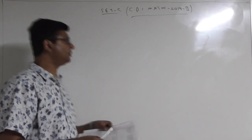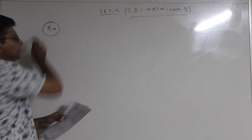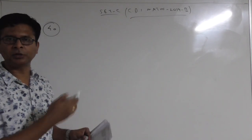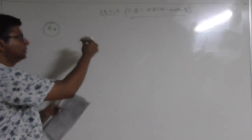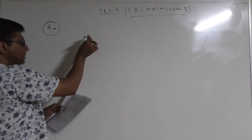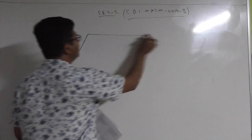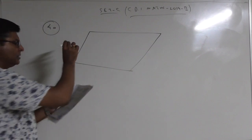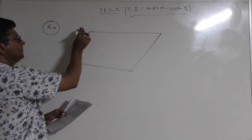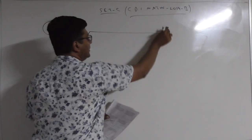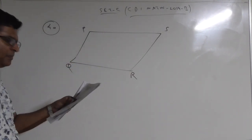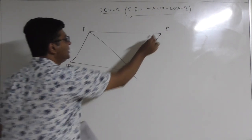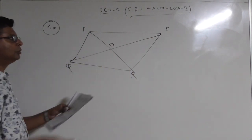The next question we are going to discuss is question number 40 from the same set. The question says: PQRS is a parallelogram. I will read the question and side by side I will explain how it is going. So PQRS is a parallelogram, and diagonals PR and QS intersect at O.